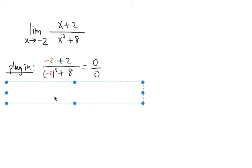And recall the formula right here. Notice that a to the third power plus b to the third power. We can factor this out as a plus b times a squared minus ab plus b squared.